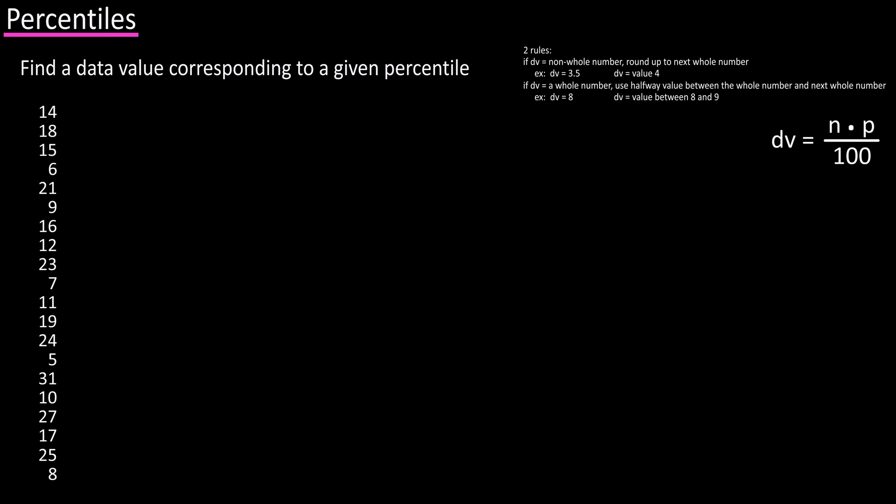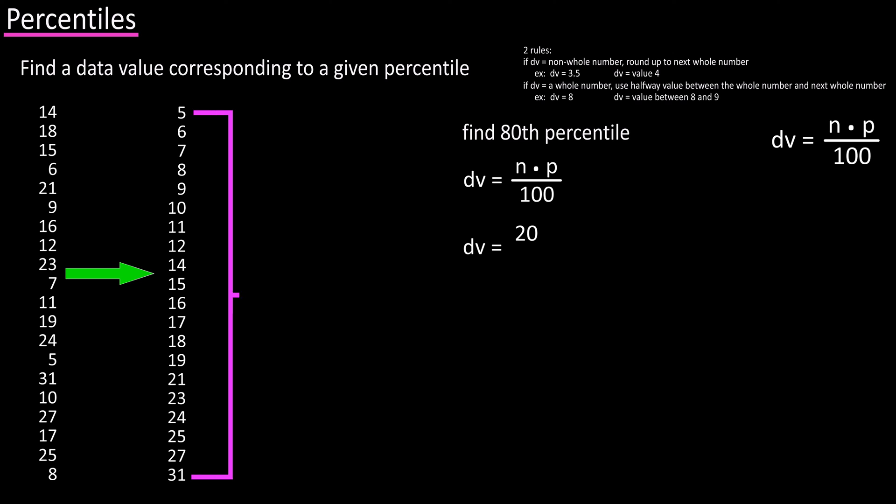So, working with our previous data set, let's say we want to find the 80th percentile. We again first arrange the data in order of smallest to largest. Then, substituting into the formula, we have dv equals 20 for n, the number of values in the data set, times 80 for p, the given percentile, divided by 100.